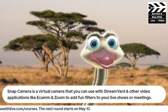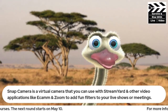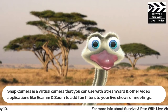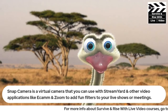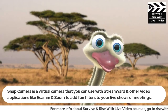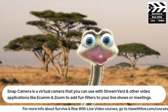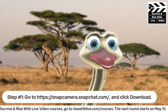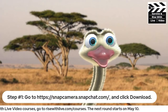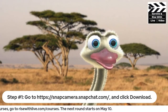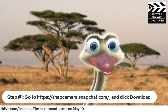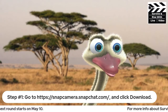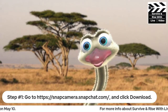Also, for some reason Facebook is saying my broadcast is not working, so shout out to Facebook. Okay, the first step — hopefully some of you are still hanging out with me — is to go to snapcamera.snapchat.com and click Download. That's pretty simple, right? Let me know in the comments — is that simple enough for you? You can do it.